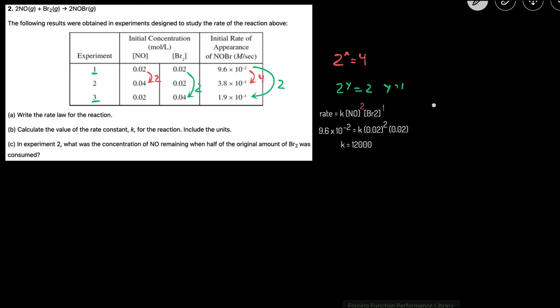The units of K will equal molarity raised to the 1 minus total order times whatever the time component is to the negative 1. So the total order here is 3. So you just do molarity 1 minus 3. You'll get molarity to the negative 2. And then the time is seconds, so this will be seconds to the negative 1.